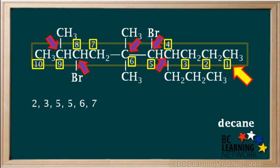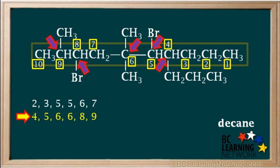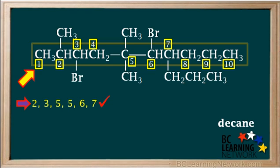Now we'll try switching the numbers, starting to count carbon atoms from the right side. Numbering this way, there would be groups on carbons 4, 5, 6, 8, and 9, giving the combination 4, 5, 6, 6, 8, 9. You can see that the first set of numbers is definitely the lower possible combination, so we'll number the carbon atoms from left to right.